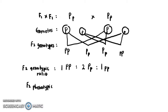For the phenotypic ratio: since homozygous dominant and heterozygous both show the dominant phenotype, their combined ratio gives 3 purple. The one homozygous recessive shows the recessive phenotype, giving 1 white. So the phenotypic ratio is 3 purple : 1 white. This is the answer for the genotypic and phenotypic ratio of F2 from the self-cross.